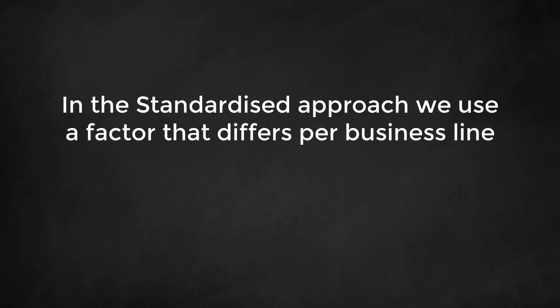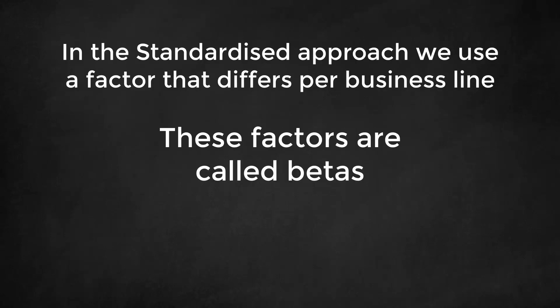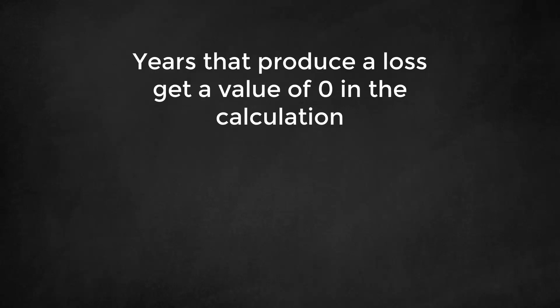Instead of having a global factor alpha for the bank, in the standardized approach we use a factor that differs per business line. These factors are called betas. The betas are set by Basel. The standardized approach also treats years with an operational loss differently. Instead of excluding the losses from the calculation, these years are included at zero value in the calculation of the three-year average.